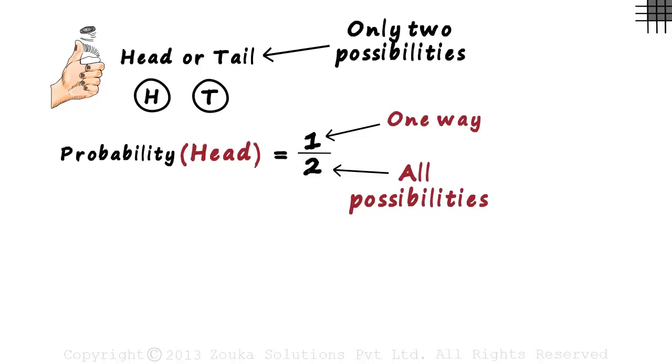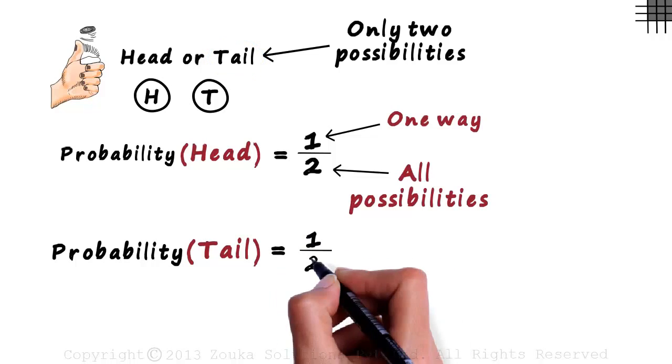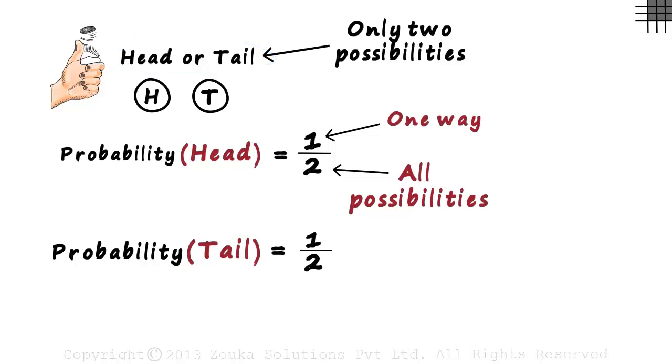Here's another question. What is the probability of a coin landing a tail? The logic is very similar. There is only one way in which we can get a tail and the total possibilities are just two, head or tail. So the probability of getting a tail is also one half.